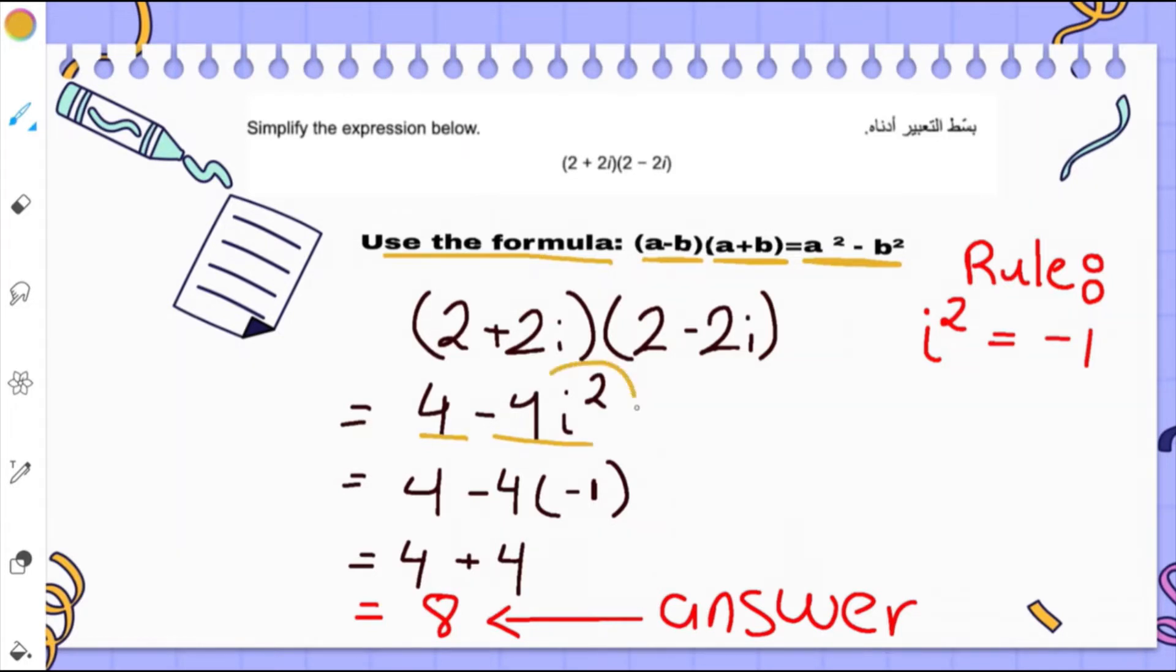And there is a rule for i squared that says that i squared is always equal to negative 1. So it's going to be 4 minus 4 times negative 1.